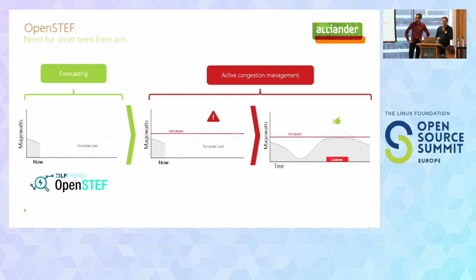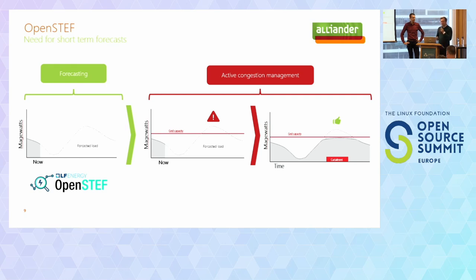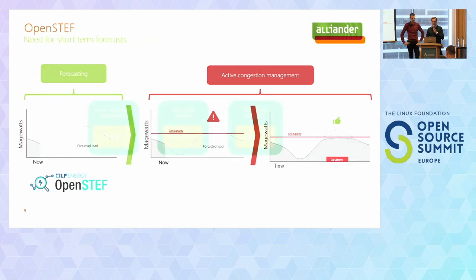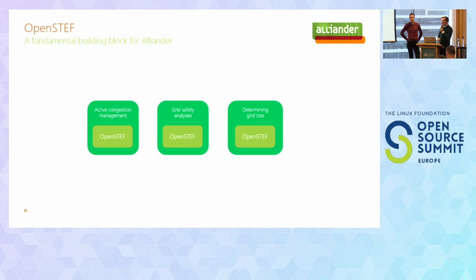OpenSTEF is a Python package used to make short-term forecasts for the energy sector. Specifically, it makes forecasts of the load on the grid for the next hours to days. If Alliander wants to perform active congestion management, it needs to know what the load on the grid will be so that it can determine if the maximum grid capacity is reached — and it needs to know this in advance so there is sufficient time to take action. Besides active congestion management, OpenSTEF is also an enabler for grid safety analysis and data mining grid loss.